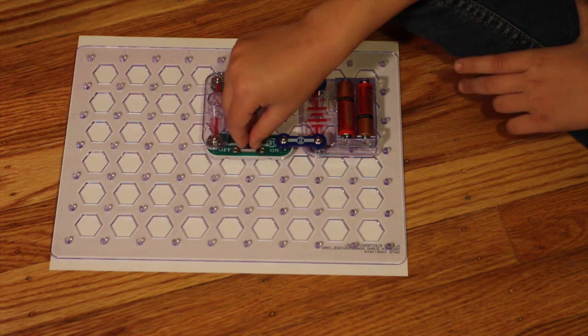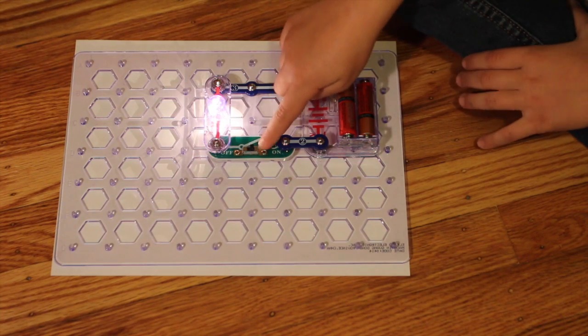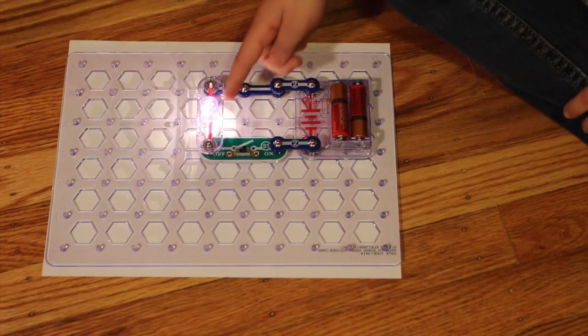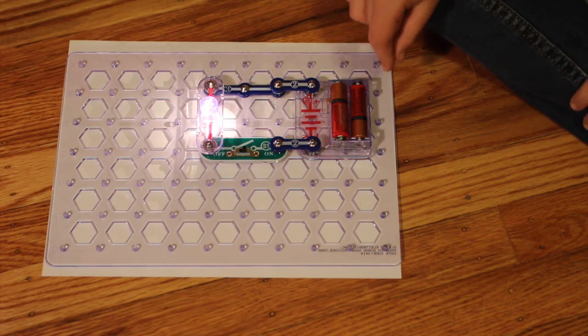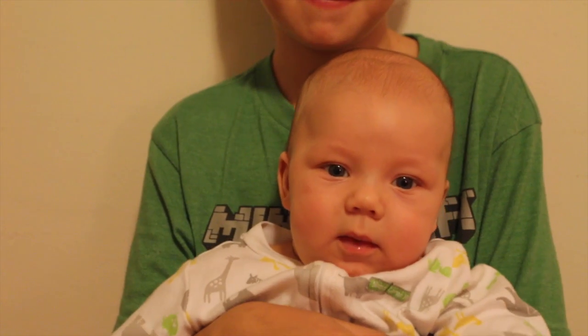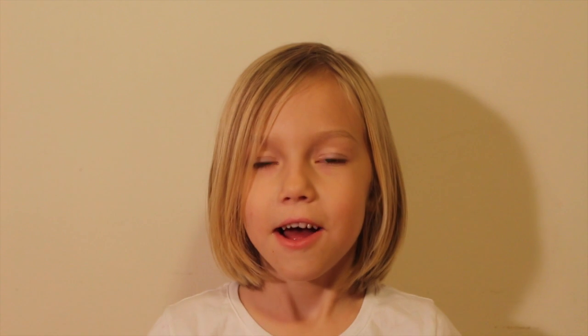So if we turn it on the light will turn on because by turning it on it will release the energy from the batteries to go into here. Now that we got the lamp to light up, let's see what else we can do with electricity.